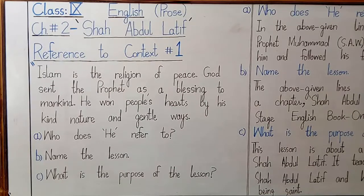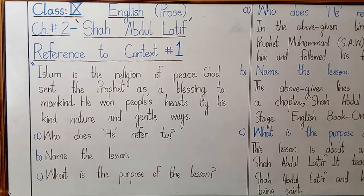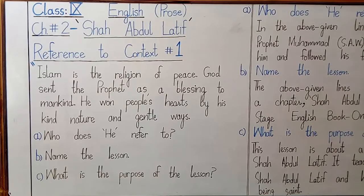Let's see how I have answered these questions. For this context you will copy it in your register as it is, and for context number 2 after this you will also copy that in your register as it is. In the end I will assign you one more context from the book, and you have to do that also in your register.